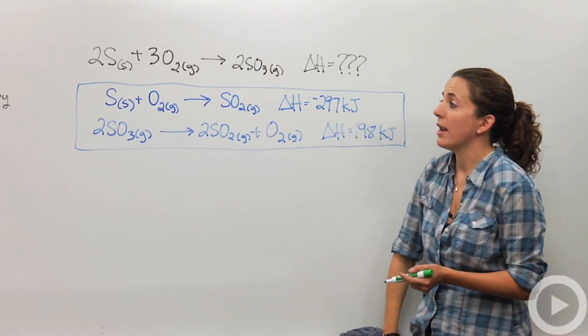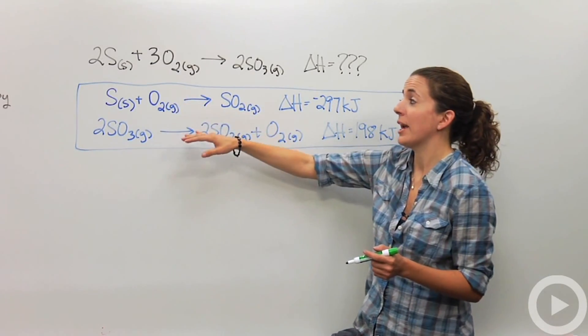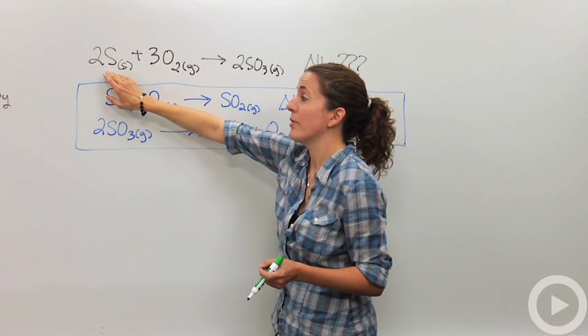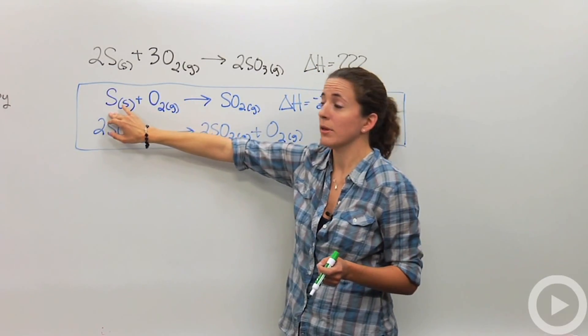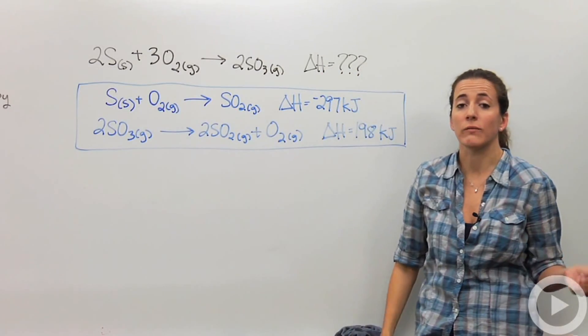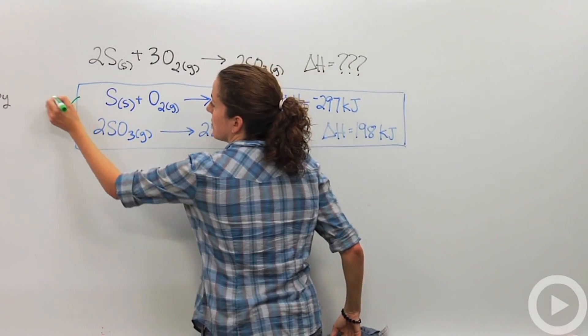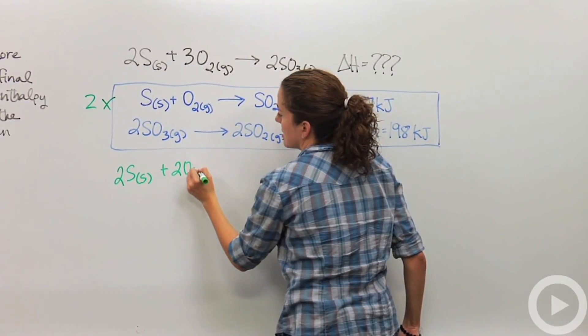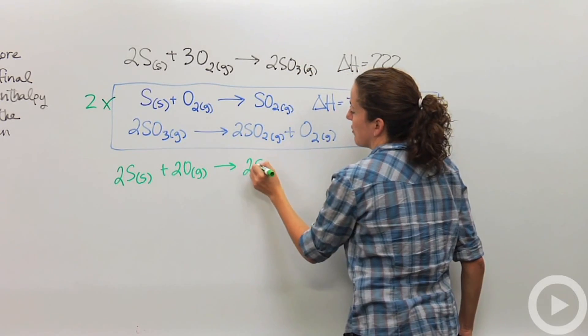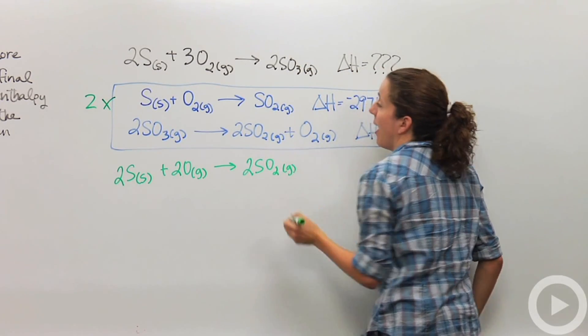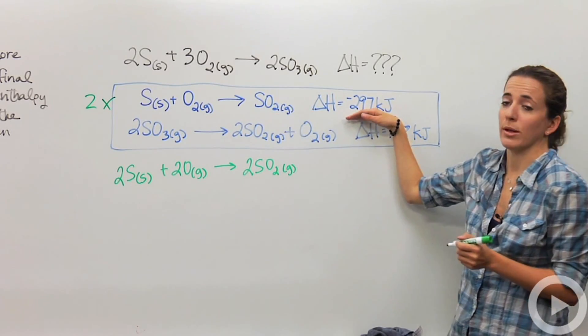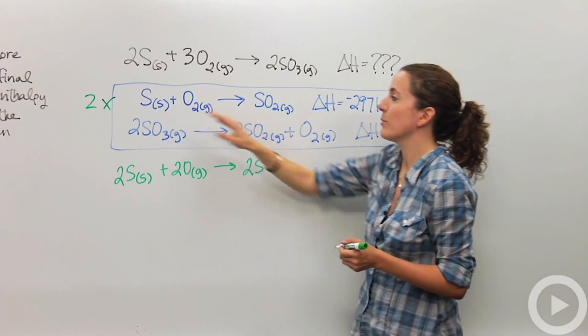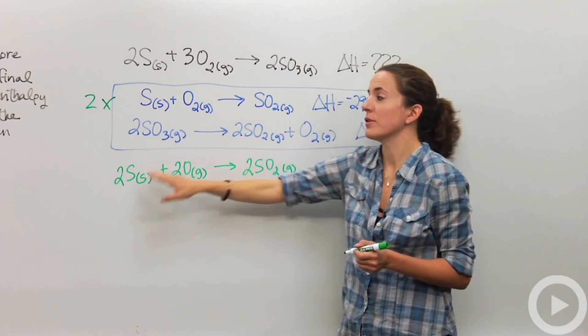So first I have to make sure that I have these reactions actually do add up to the final reaction. So let's look at this first thing. I need two sulfurs on my reactant side. Well here's sulfur but I only have one. So I'm going to multiply this whole reaction by two so I can get two sulfurs on my reactant side. So that makes two sulfur plus two oxygen gases yields me two sulfur dioxides. And because I multiplied the reaction by two this also must be multiplied by two because this negative 297 kilojoules is telling me how much energy is going to be released for one mole of sulfur but I'm now doing two moles of sulfur.